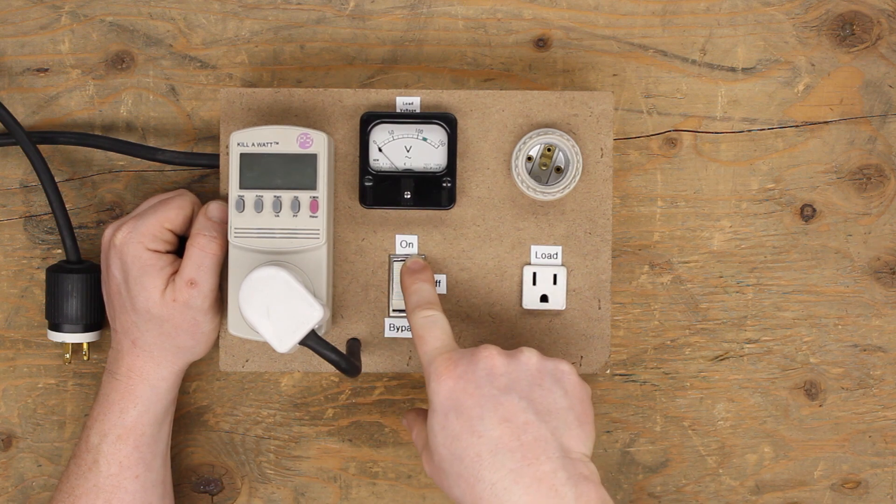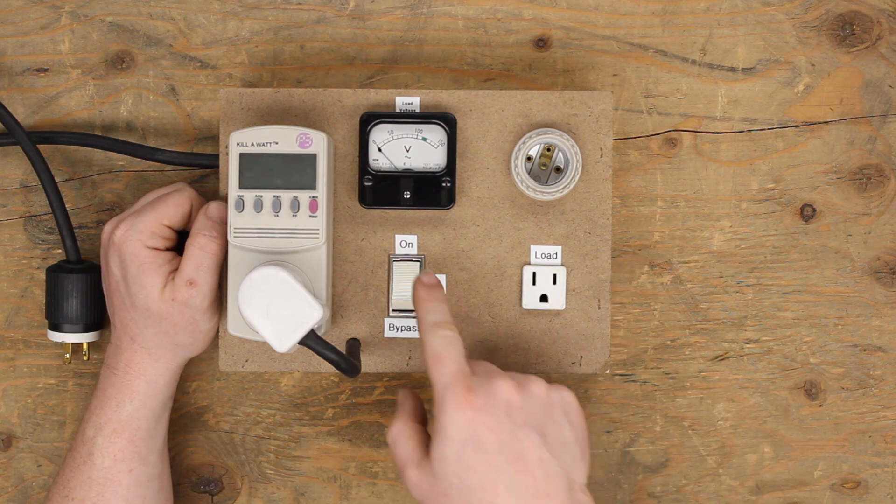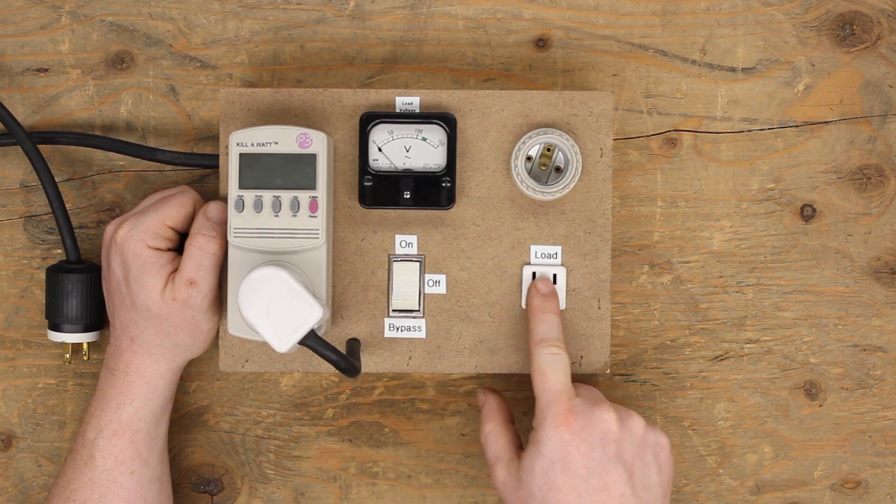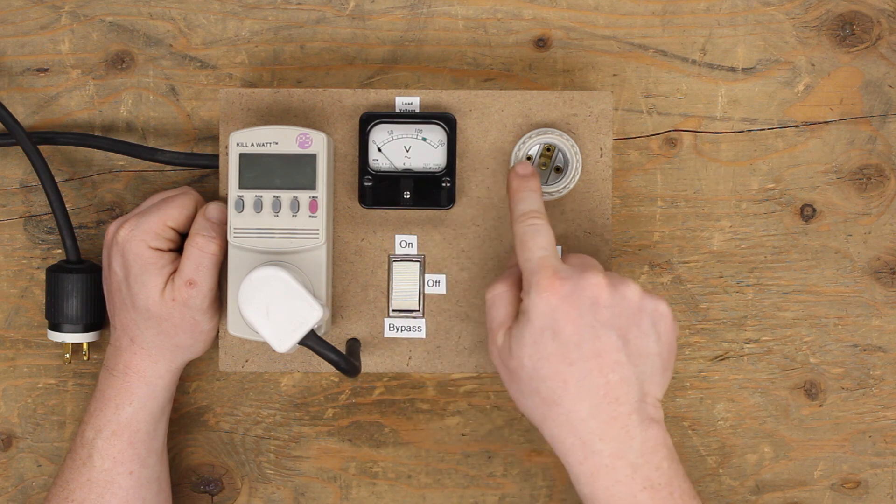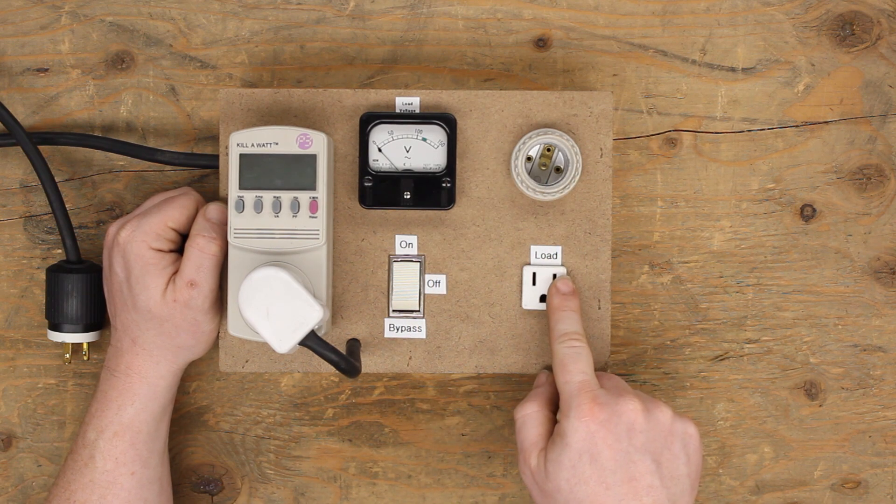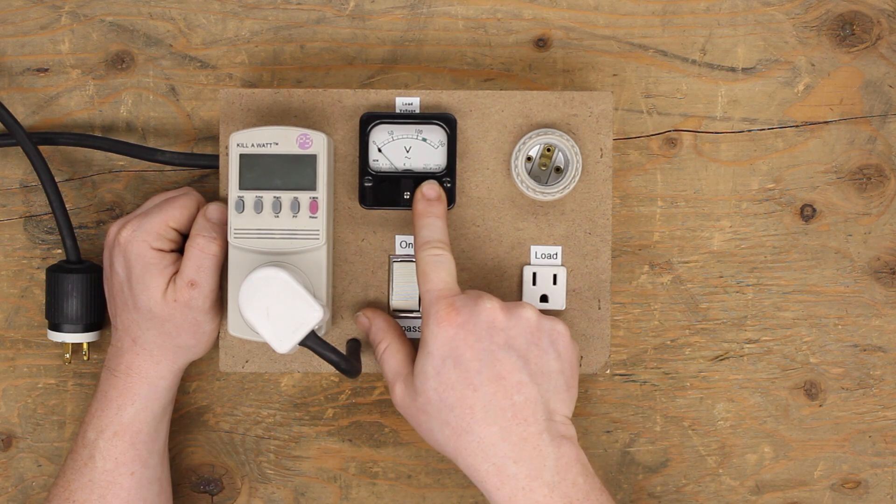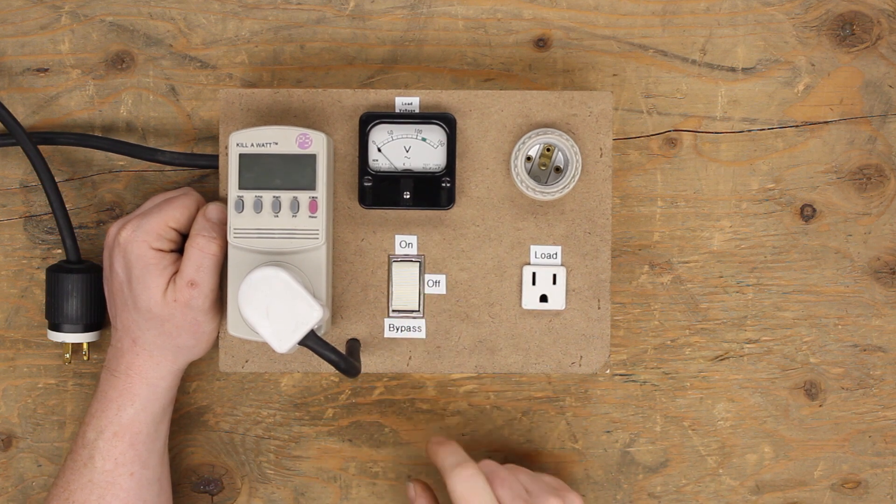If I click it to the on position, I would now have my neutral going straight to the outlet, and I would have my line would be going through the light bulb to the outlet with the voltmeter in between.